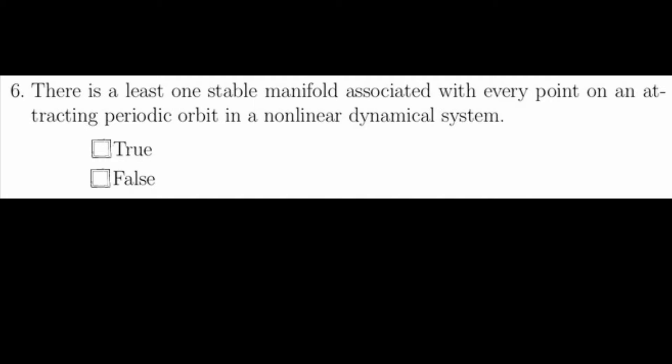Question six asks if there's at least one stable manifold associated with every point on an attracting periodic orbit in a nonlinear dynamical system. This is definitely true. One way of seeing this is because it's an attracting periodic orbit, then at every point along the periodic orbit, there needs to be a direction of shrinking. Said differently, if at some point along the periodic orbit all manifolds were unstable, then at this point the trajectories would be ejected from the periodic orbit, and this would not be an attracting periodic orbit of the dynamical system.